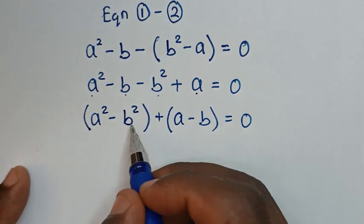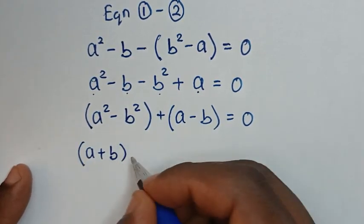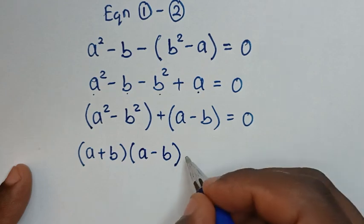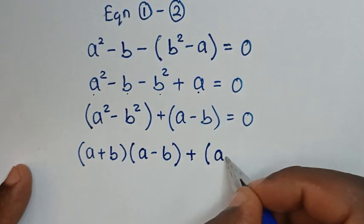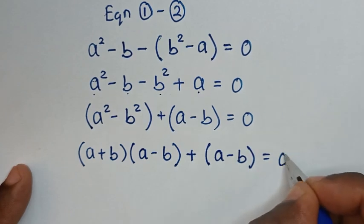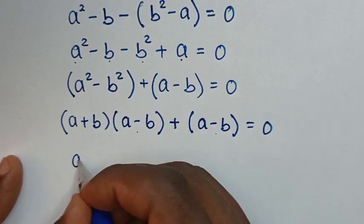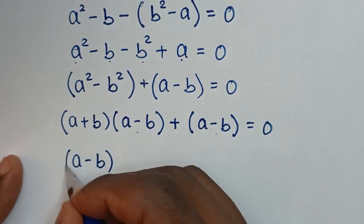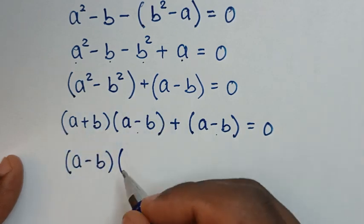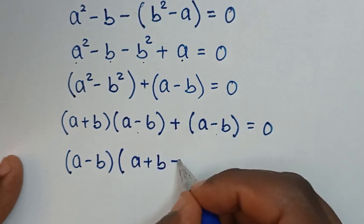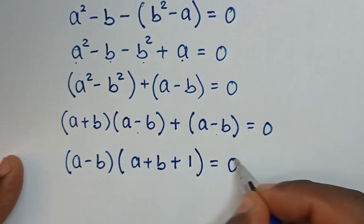The difference of two squares a squared minus b squared factors as a minus b bracket times a plus b. So here it will be a minus b bracket times a plus b, then plus a minus b divided by a minus b which is 1, bracket is equal to 0. Taking a minus b as a common factor gives a minus b times bracket a plus b plus 1 is equal to 0.